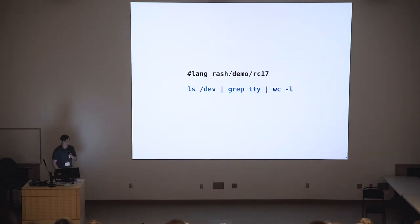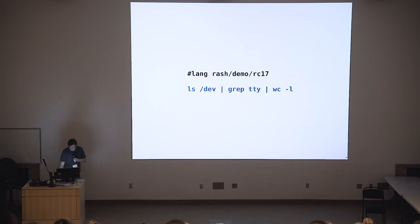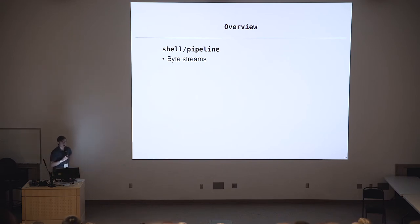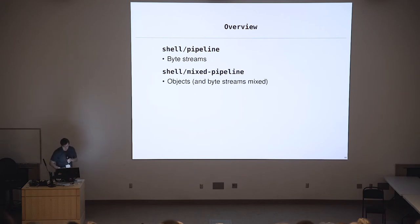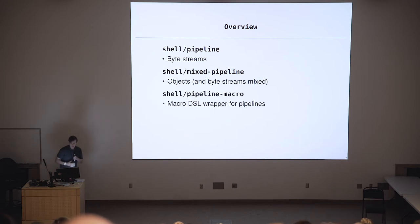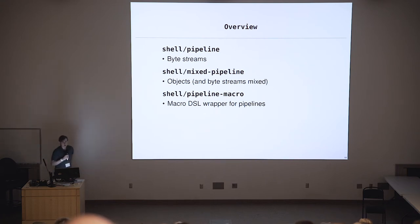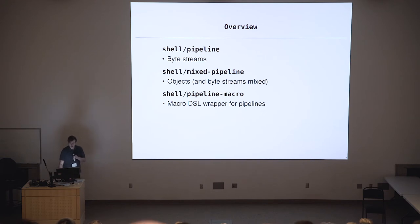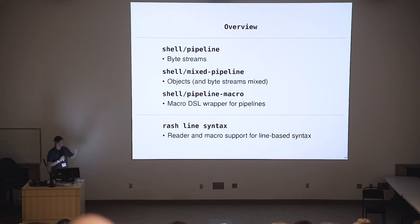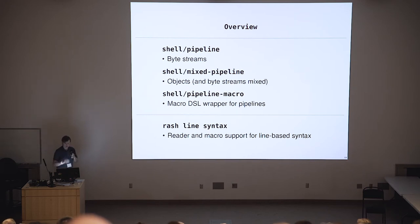So that's why I created RASH. You can write stuff like this in it — that's what it looks like. It's made of four parts. The lowest part is my shell pipeline library; it deals with functions and processes that work with byte streams and wiring them together. On top of that, I've built a mixed pipeline that deals with objects — functions that take and produce objects, mixing them with the previous pipelines that deal with byte streams. On top of that, there's a macro DSL layer that gives you a nice, extensible syntax with a lot of sugar. Finally, there's the line syntax — a reader and macro support for a really nice line-based syntax.